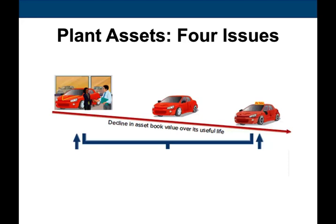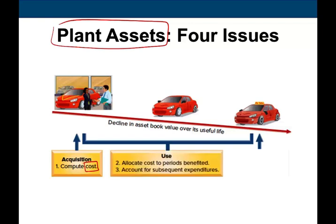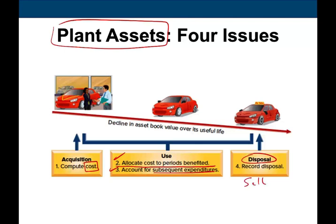In this session, we're going to get to the last part of a plant asset's life. What are the stages of a plant asset's life? First, we acquire the plant asset and worry about computing the cost — we did this in a prior recording. Then we determine the depreciation, which is allocating the cost to the period benefited. We also account for subsequent expenditures. And finally, once we are done with the asset, we dispose of it — in this session, by selling it.